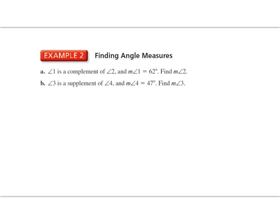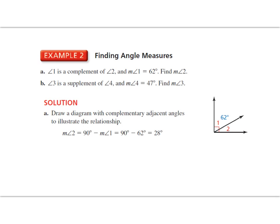Let's look at finding angle measures, example two, part A. Angle 1 is a complement of angle 2, and the measure of angle 1 equals 62 degrees. Find the measure of angle 2. Start by sketching a diagram — draw a right angle and put a ray on the interior, labeling angle 1 as 62 degrees. Since they're complementary, subtract 62 from 90 degrees. The measure of angle 2 equals 28 degrees.